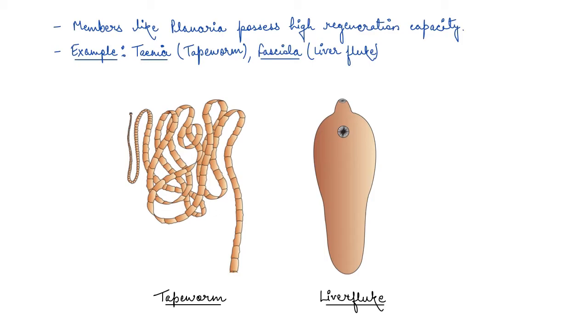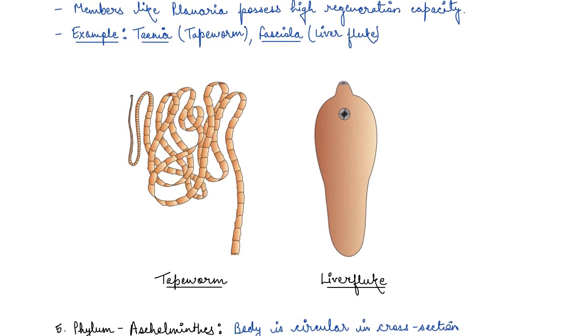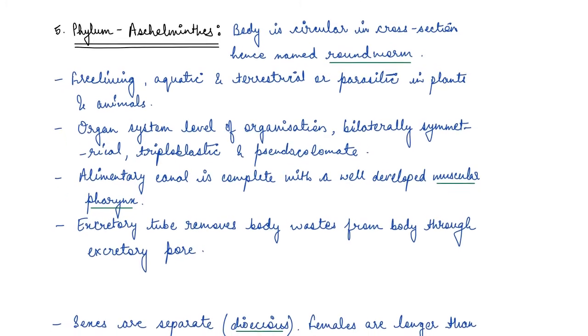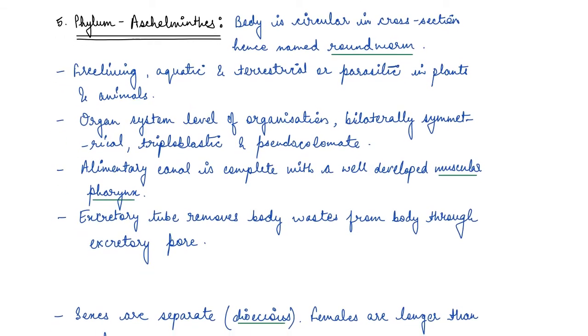The next phylum is Aschelminthes. What are Aschelminthes? Aschelminthes have circular body in cross section and that is why they are known as roundworms - because of their circular body in cross section they are known as roundworms. These are free living, they are aquatic and terrestrial, or they are also parasitic in plants and animals. The phylum Aschelminthes can be free living, aquatic, terrestrial, and parasitic as well in plants and animals.